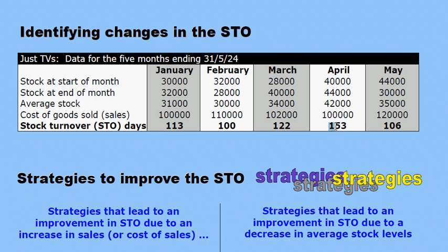Between April and May, the stock turnover went from 153 to 106 days — quite a significant decrease in days, which is certainly favorable, meaning it's taking fewer days to convert stock to sales. There's been a significant increase in sales or cost of sales, and at the same time a significant reduction in average stock levels. Reducing stock levels while sales are going up indicates more efficient management of stock, expressed by the increase in stock turnover — less days, rapid turnover.